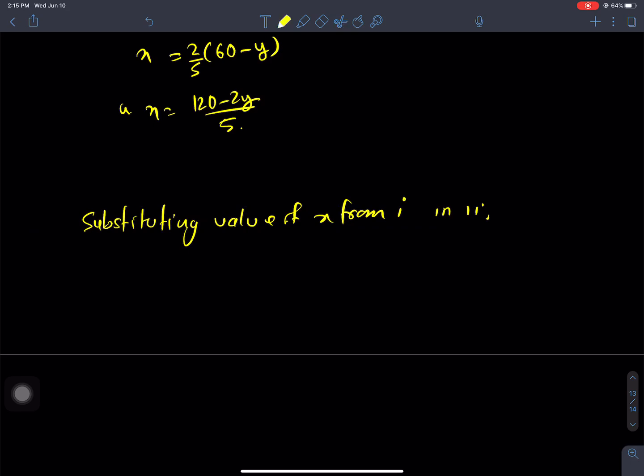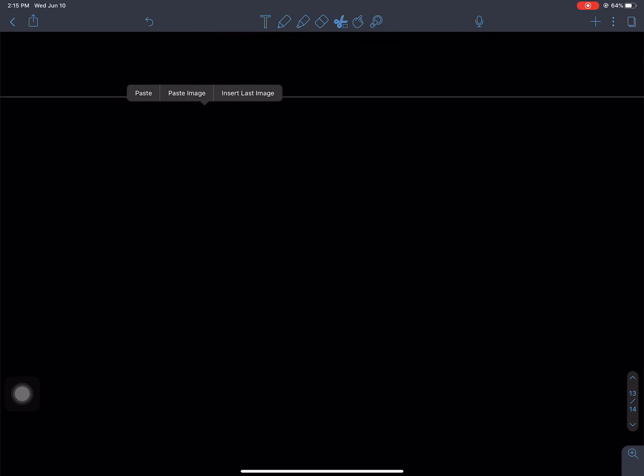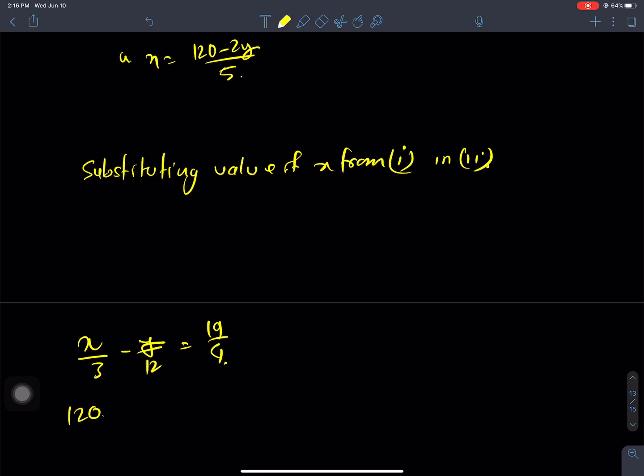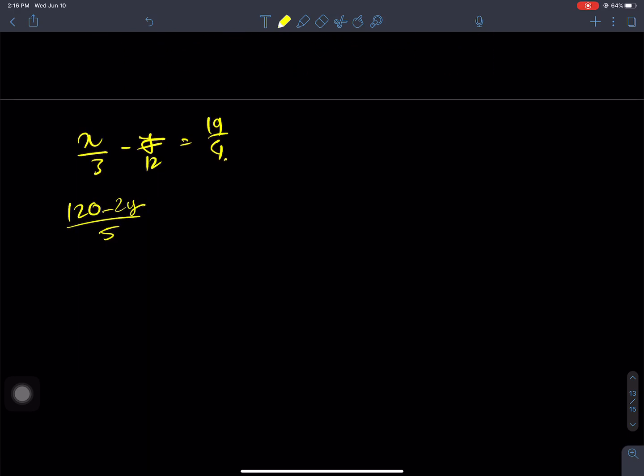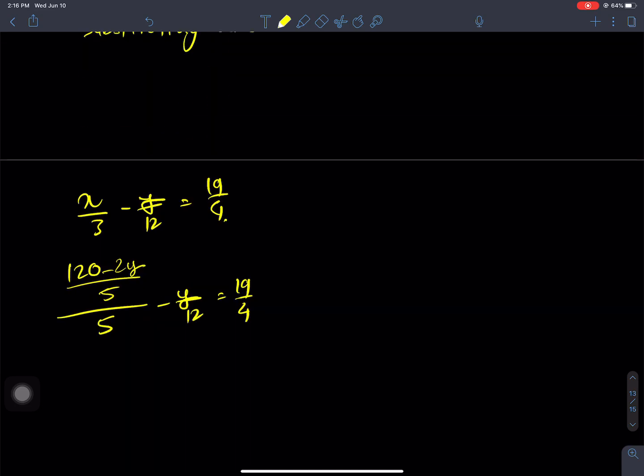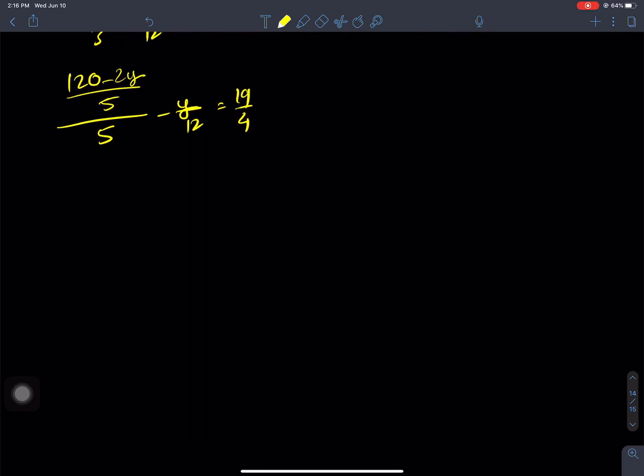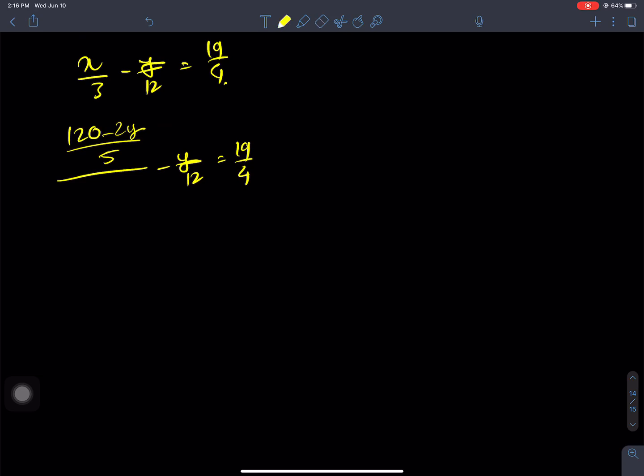Now I will substitute the value of x from equation I into equation II. We have x/3 - y/2 = 19/4. Substituting x = (120 - 2y)/5: [(120 - 2y)/5]/3 - y/2 = 19/4. Taking reciprocal, this becomes (120 - 2y)/15 - y/2 = 19/4.